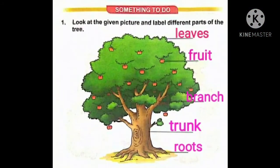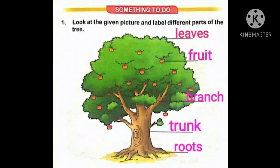Question number 1 is: look at the given picture and label different parts of the tree. We have to label different parts of the tree, so we are going to start from the top. Pate ko hum kya bolte hai? Leaves. The spelling is L-E-A-V-E-S. Leaves.